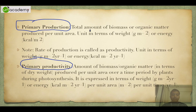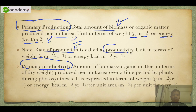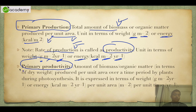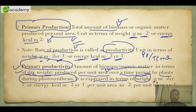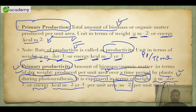Primary production is the total amount of biomass per unit area — the unit is grams per meter square, or in terms of energy, kilocalories per meter square. The rate of production is called productivity, expressed as weight per area per unit year or energy per unit area per unit time. Primary productivity is primary production divided by time — the amount of biomass or organic matter produced per unit area over a time period by plants during photosynthesis, expressed in weight per unit area per unit time, or energy per unit area per unit time.